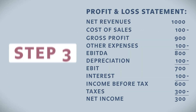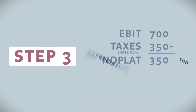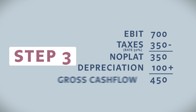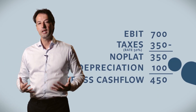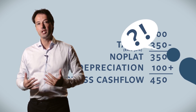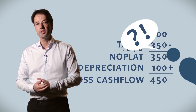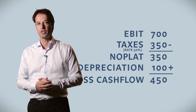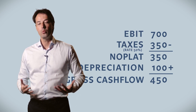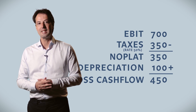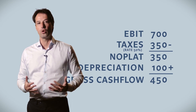Step three: we add depreciation of 100 to the NOPLAT to get to the gross operating cash flow. Why do we add it? Because depreciation is not an expense, but a reduction of the value of assets over time. That is why we correct the EBIT to get to the gross operating cash flow of 450.